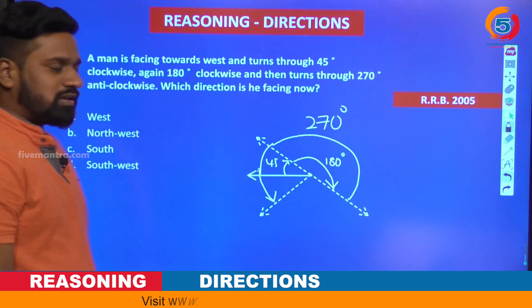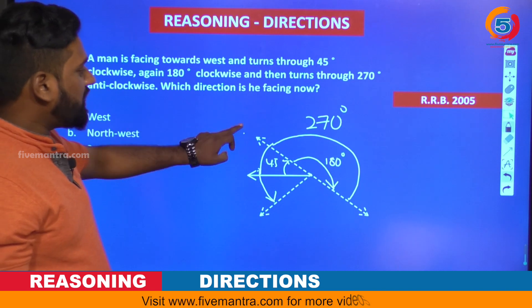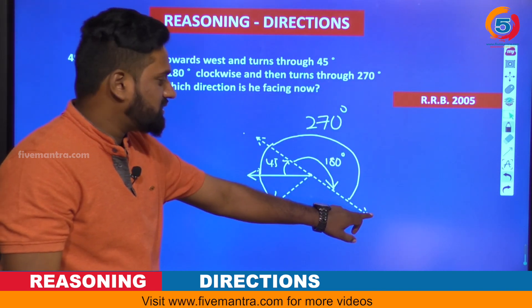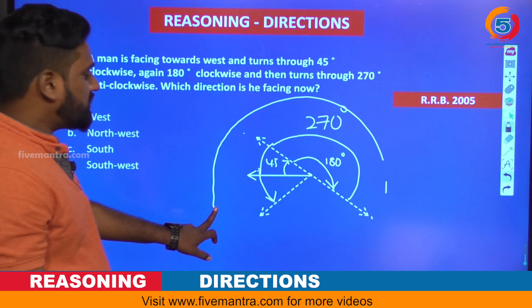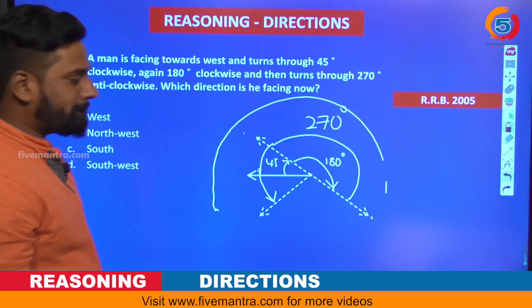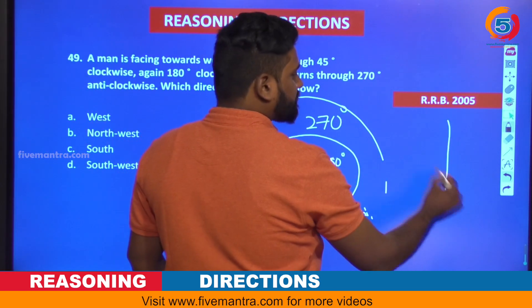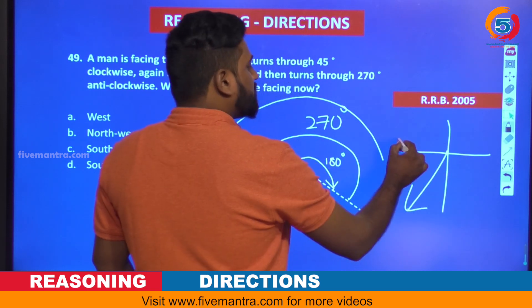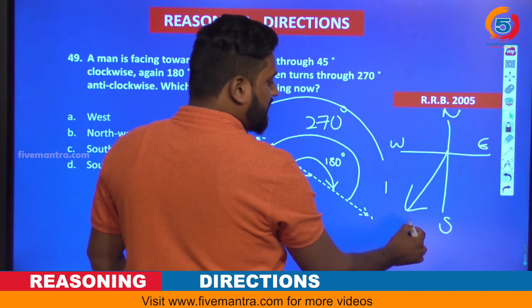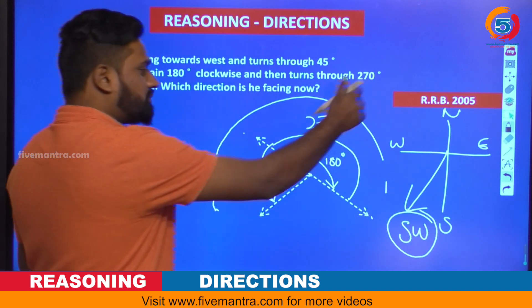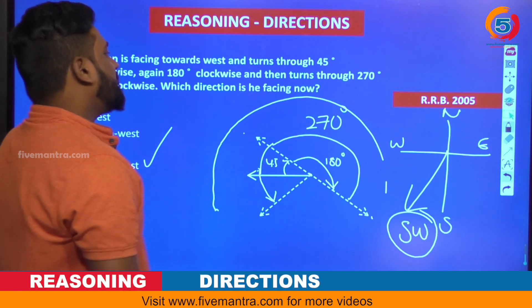To summarize: first facing west, turns 45 degrees clockwise — that position. From there, 180 degrees clockwise — this position. Then 270 degrees anti-clockwise — the final arrow is here. Which direction is this? West is here, South, North, East — so this direction indicates South-West. The answer is South-West — the fourth option.